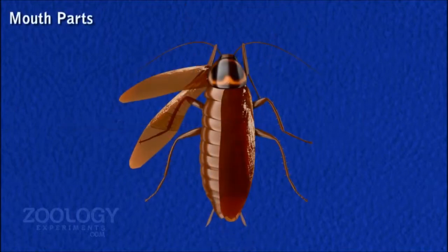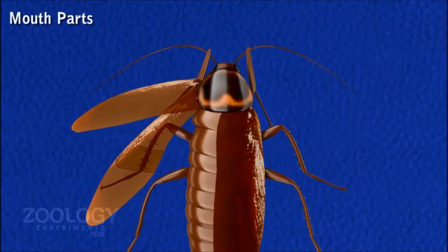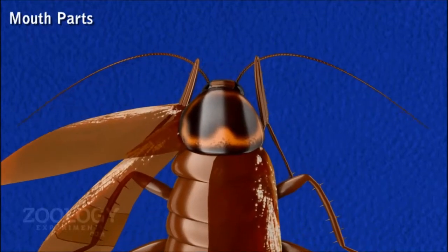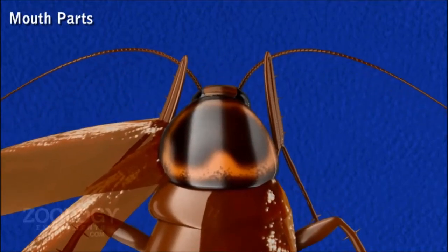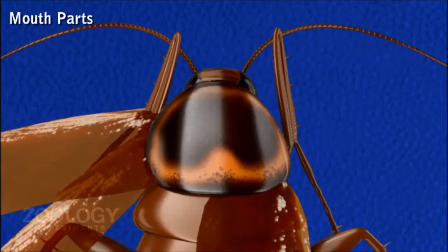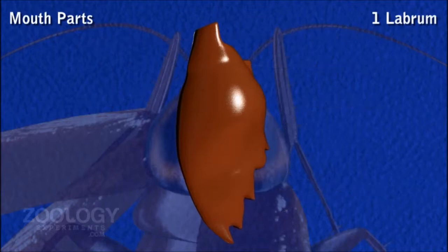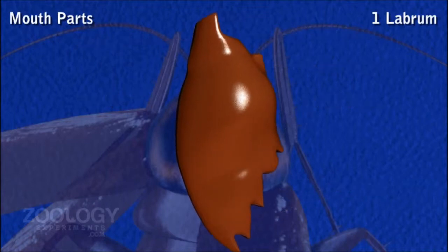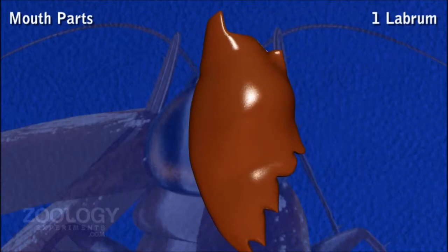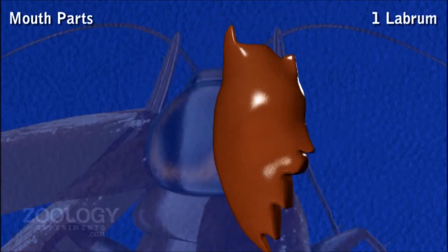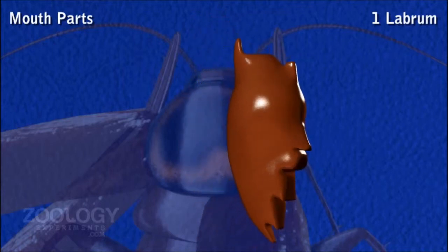Mouth Parts. The parts surrounding the mouth are known as mouth parts. Labrum consists of submentum, mentum, pulpifer, prementum, glosa and paraglosa. Labrum overlaps the toothed portion of mandibles.